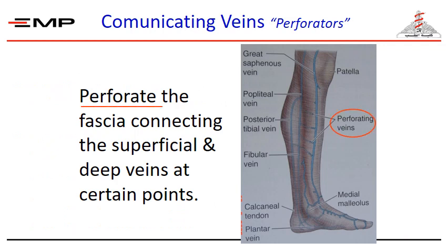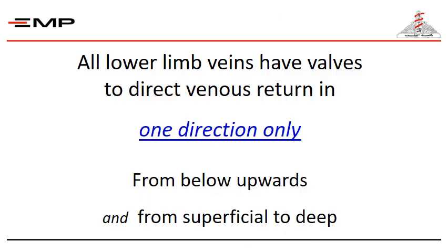Several perforating veins drain the superficial blood into the deep system. Valves within these perforators normally ensure one-way flow. Most perforators lie medially on the calf above the ankle, but there is a fairly constant anterior perforator in the medial mid-thigh. You should notice that all lower limb veins have valves to direct the venous blood return, directed in one direction only: from below upwards and from superficial to deep.